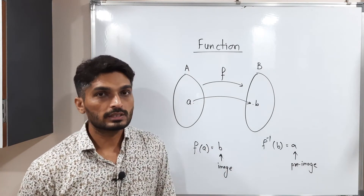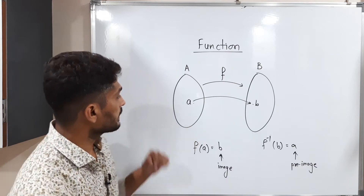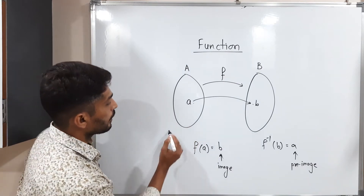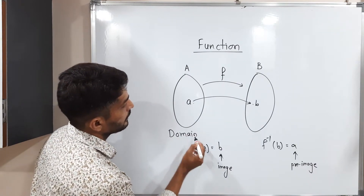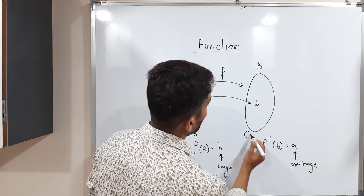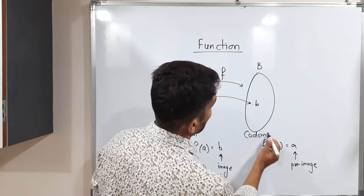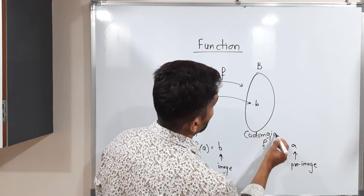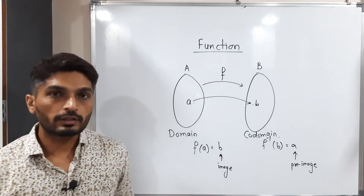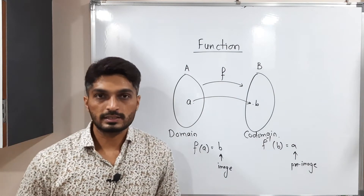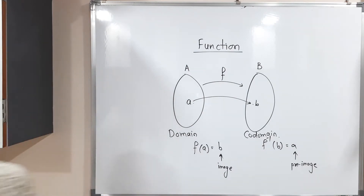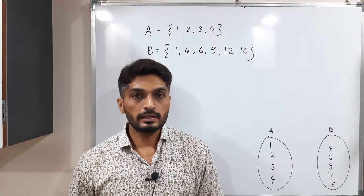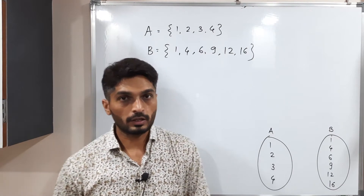Set A is called the domain, and set B is called the co-domain. I'm sure you are already familiar with all these concepts. Make a screenshot of it, then we will go further. Let us discuss one example.